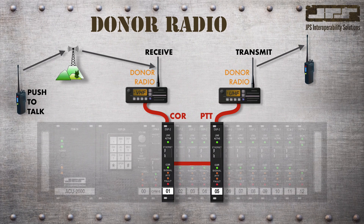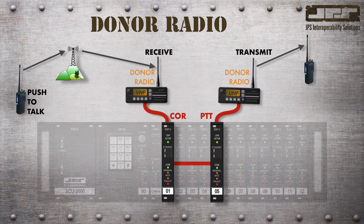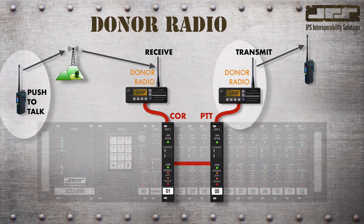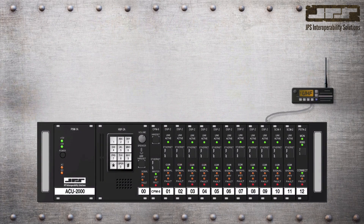For all intents and purposes, when a user presses the push-to-talk on their radio, they activate the transmitter on all other disparate radios associated in the interoperable cross connection. So, through the virtues of the digital signal processor, when one speaks into their own radio, they are virtually speaking into their allied agency's radio system at the same time, without the need to handle or possess the disparate agency's radio.